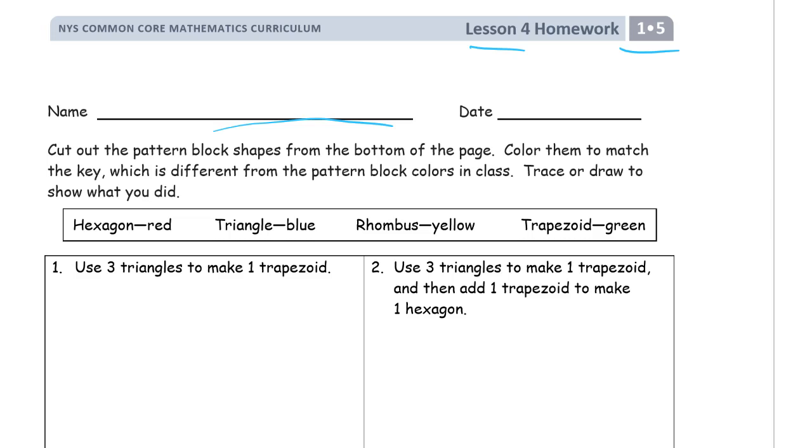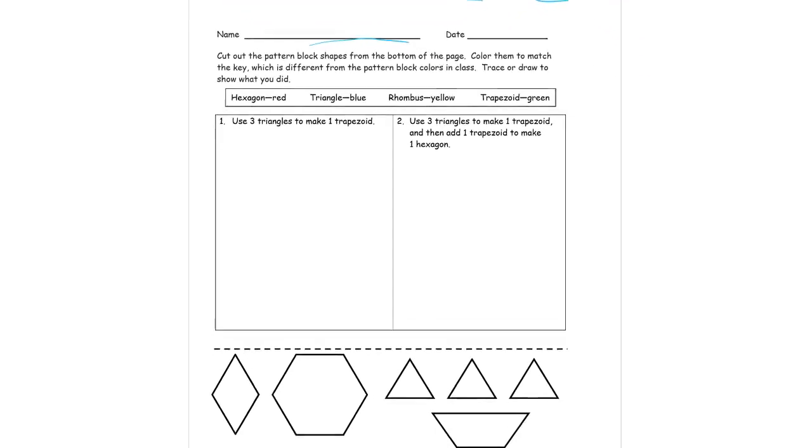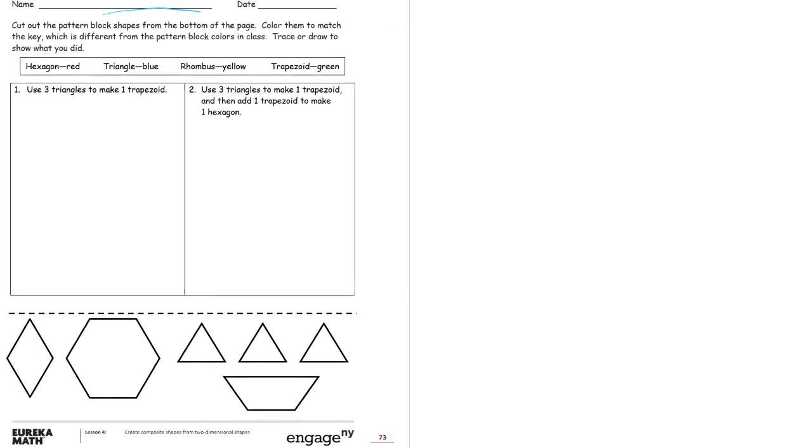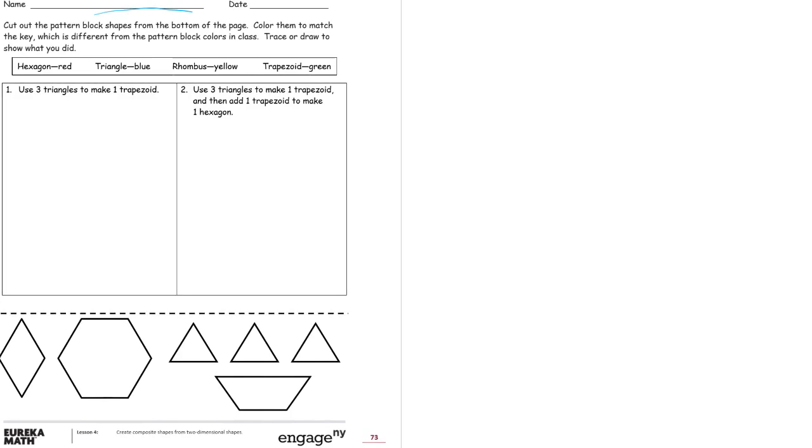You can see here the pattern blocks you might have seen before. Hexagons are usually yellow, triangles are usually green, these trapezoids are usually red, and these rhombuses are usually blue. But don't color them those colors. We're going to use the colors that it says to use.